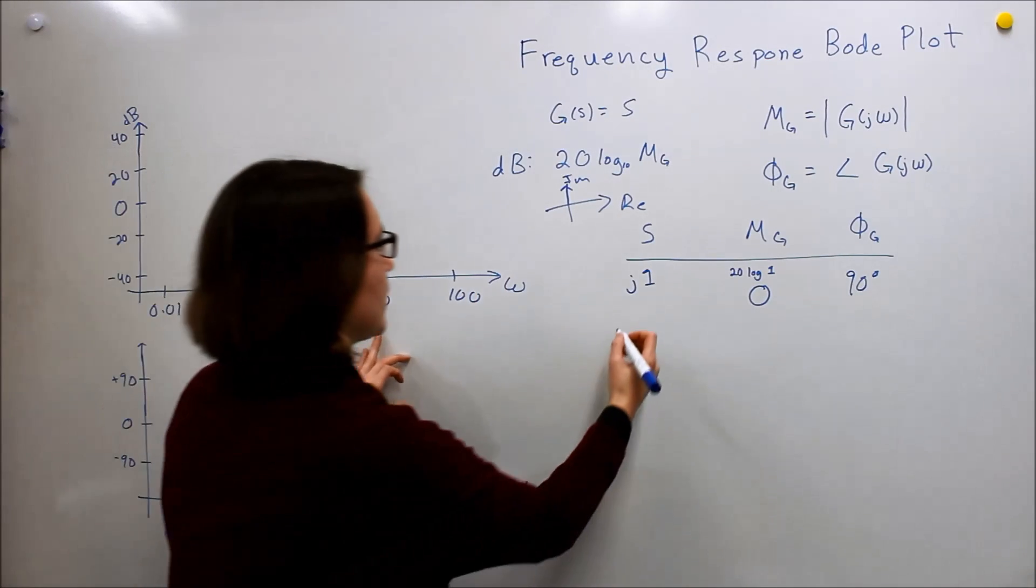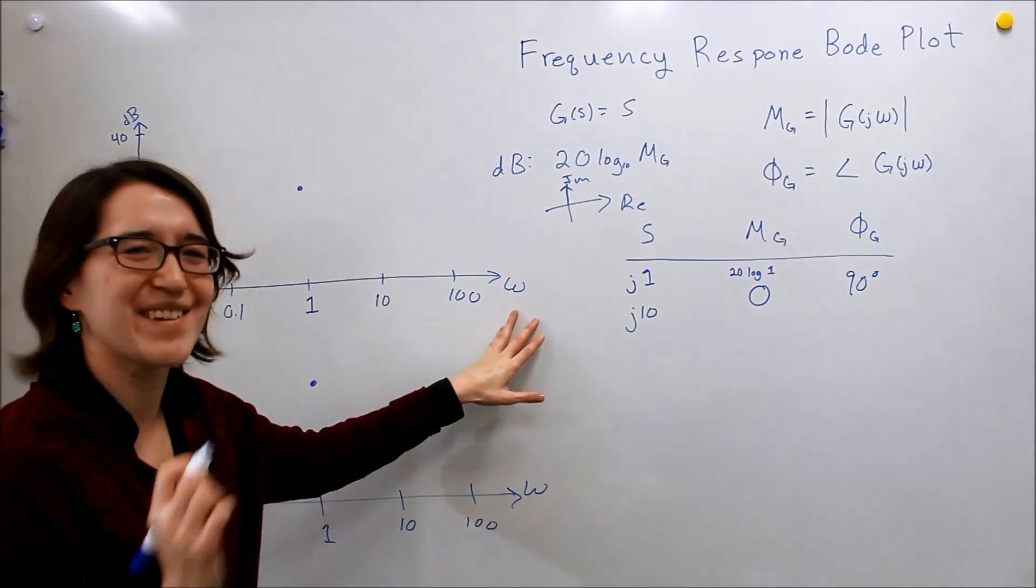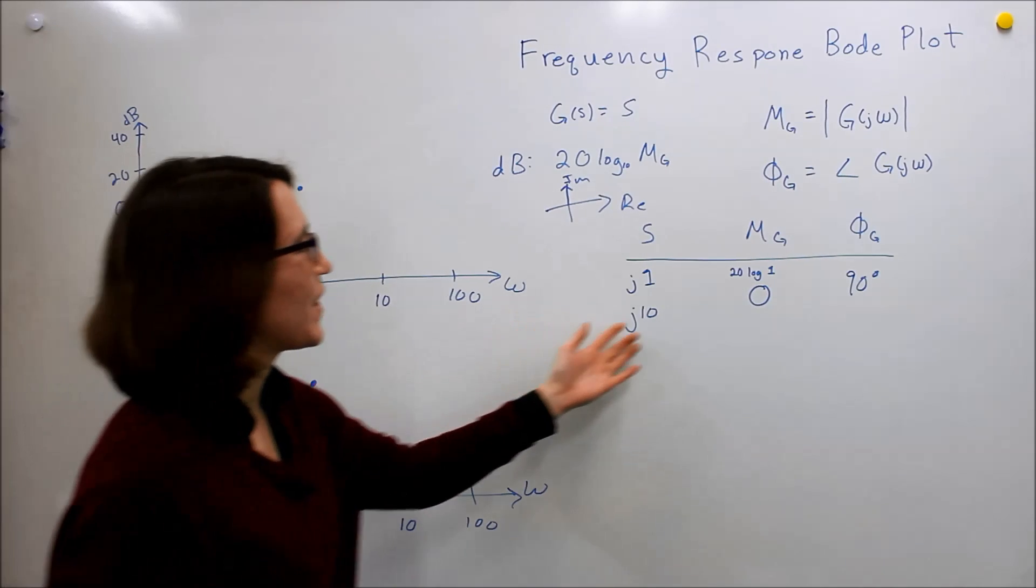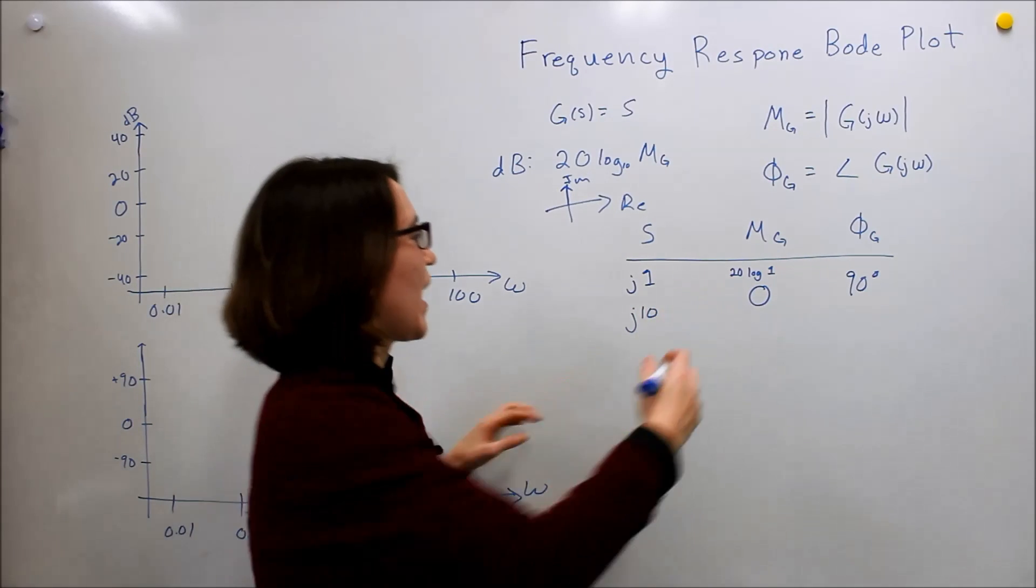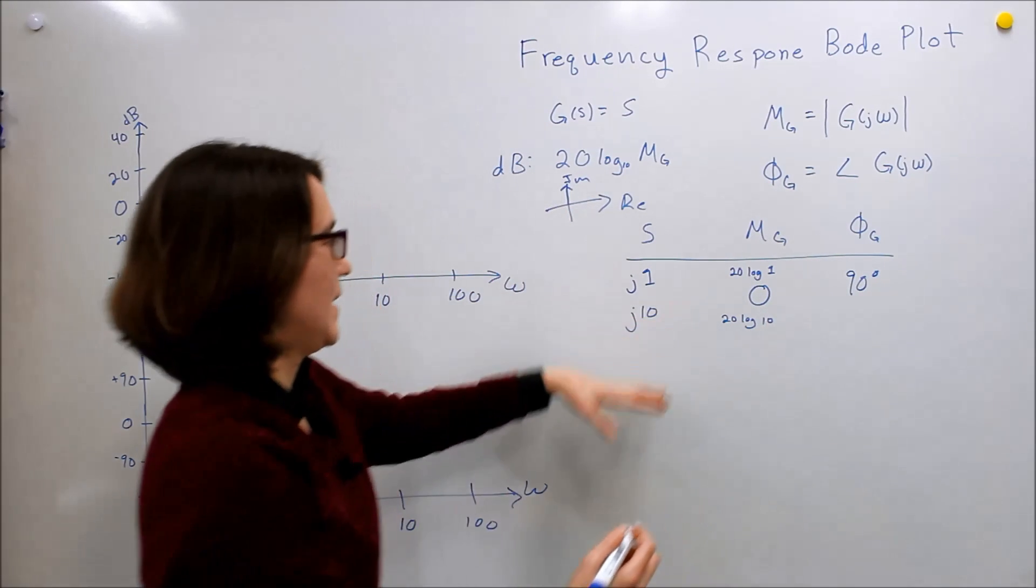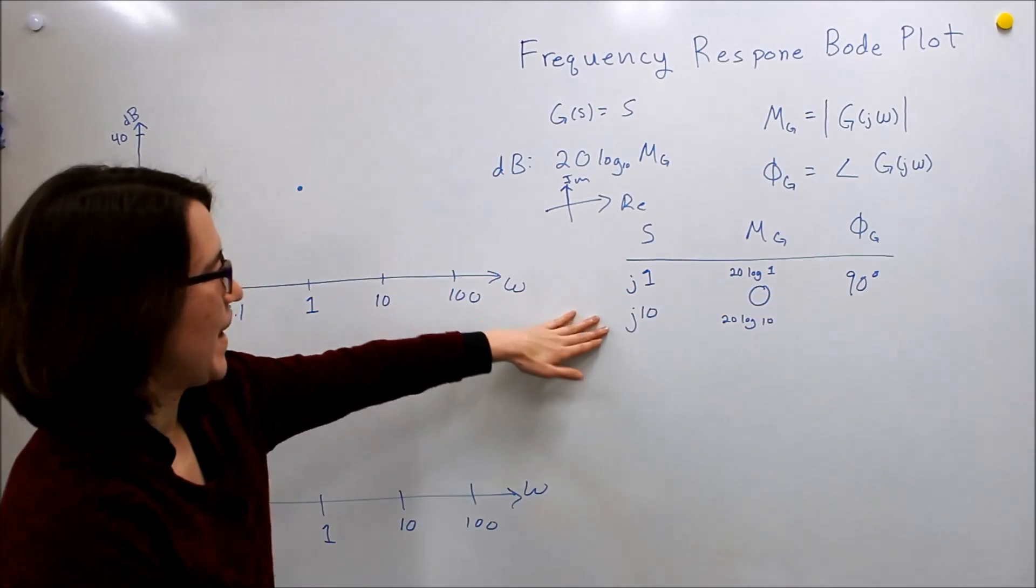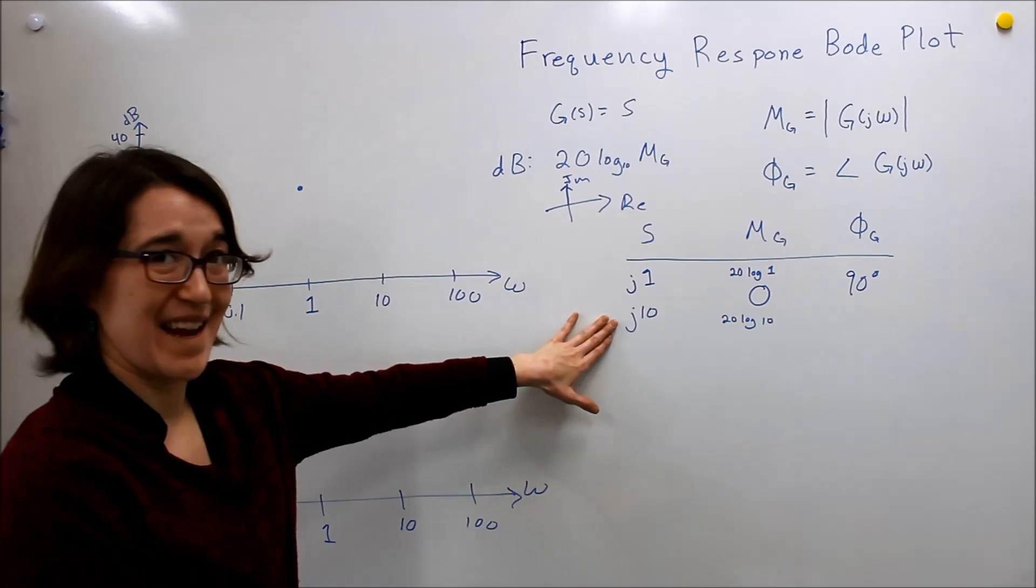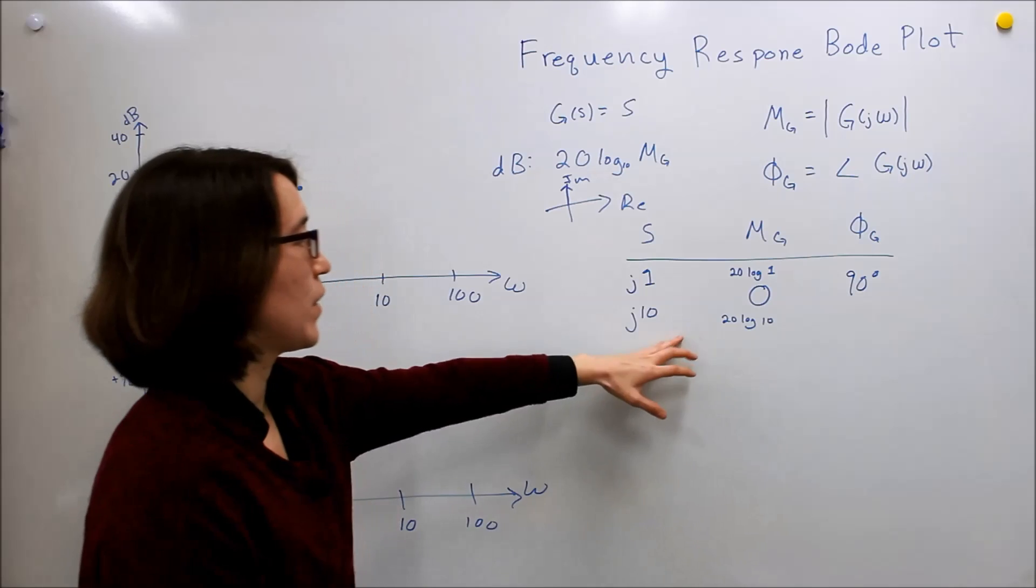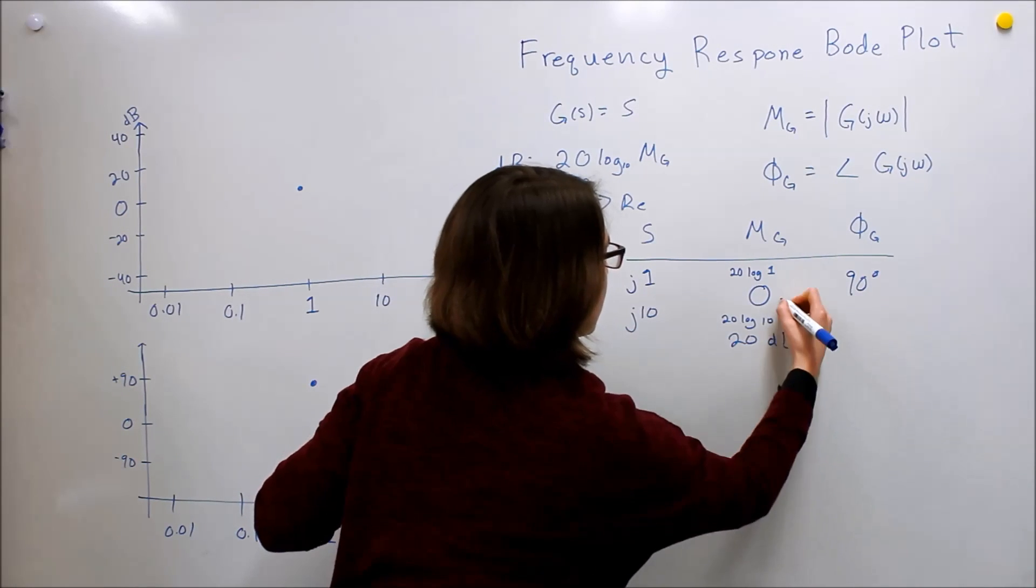We're going to go to omega equals 10, which means S equals j times 10. If we put that into our formula, we have 20 log 10. When we put it in, log of 10 is 1, so it's 1 times 20. We get 20 dB.